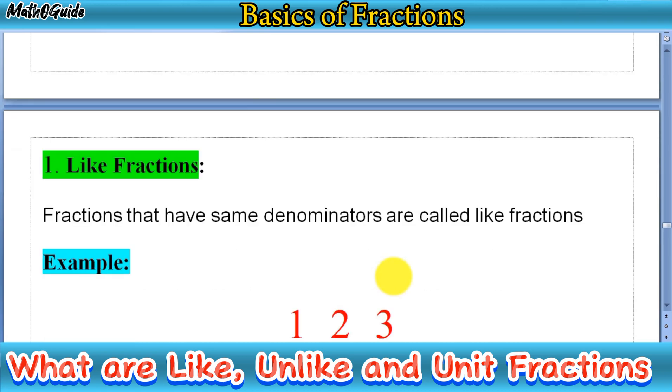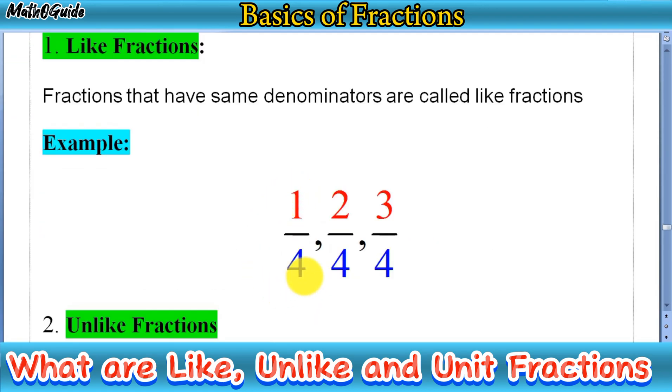In fractions, we have two numbers, two parts. The number above the bar is called the numerator, and the number below the bar is called the denominator. Today our first type is like fractions.